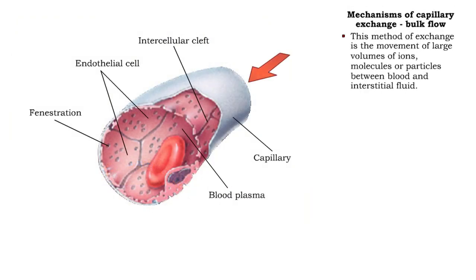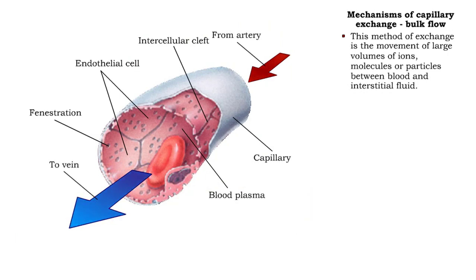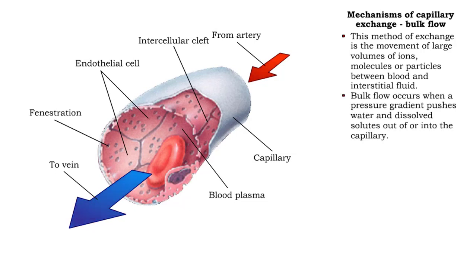Bulk flow is the movement of large volumes of ions, molecules, or particles between blood and interstitial fluid. The movement occurs when a pressure gradient pushes water and dissolved solutes out of or into the capillary. Bulk flow is always from an area of high pressure to an area of lower pressure and continues as long as pressure differences exist.